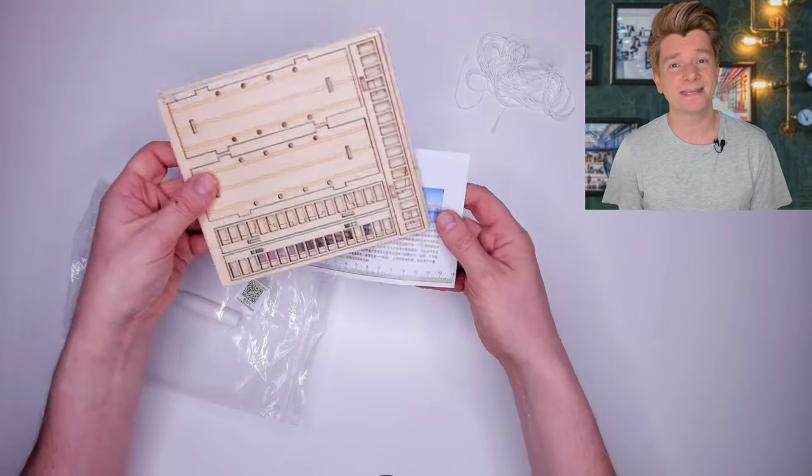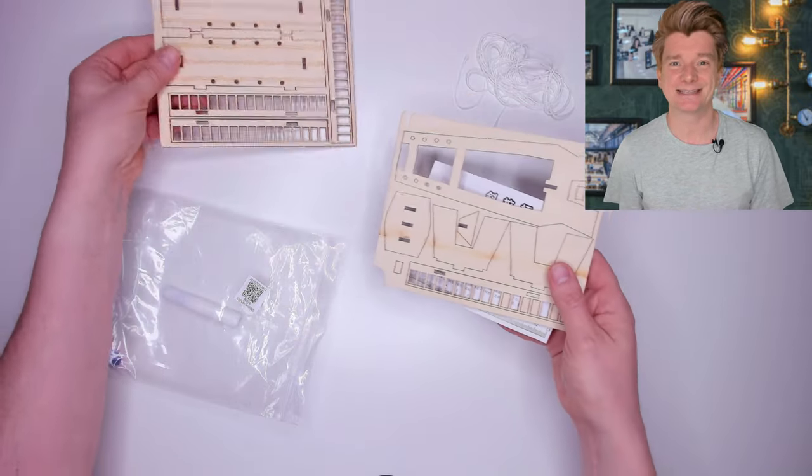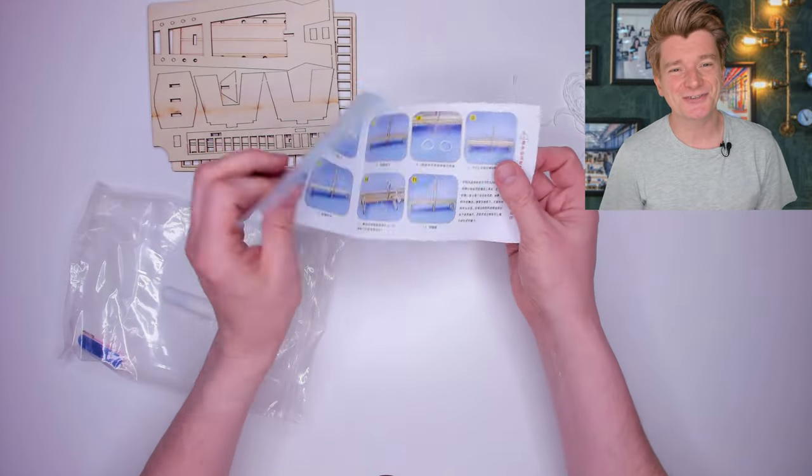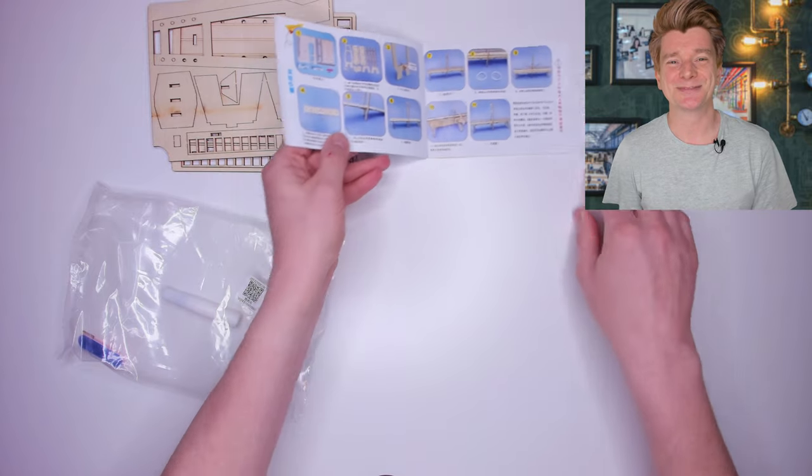First up we have the wooden pieces of the bridge which are laser cut into this plywood, the instructions which are entirely in Chinese, some string, a file and some glue.